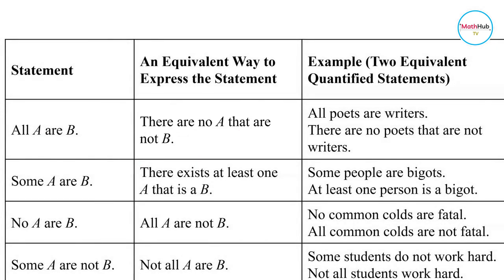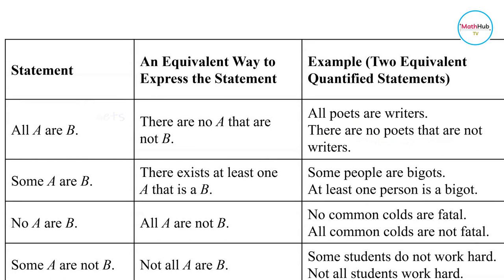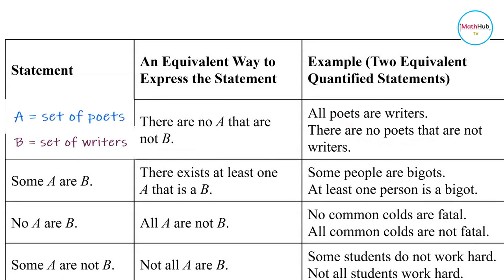Using two equivalent quantified statements as an example: 'All poets are writers' can equivalently be stated as 'There are no poets that are not writers.' Here, A is 'poets' and B is 'writers,' so 'All poets are writers' becomes 'There are no poets that are not writers.'